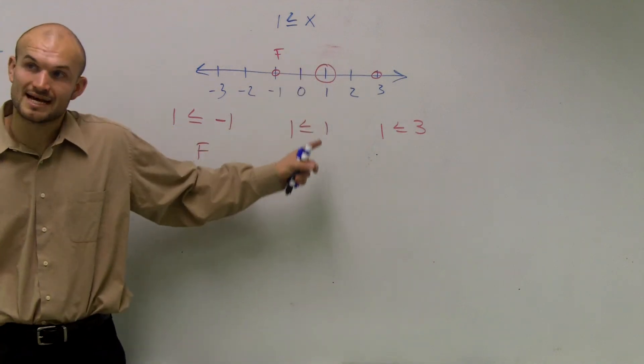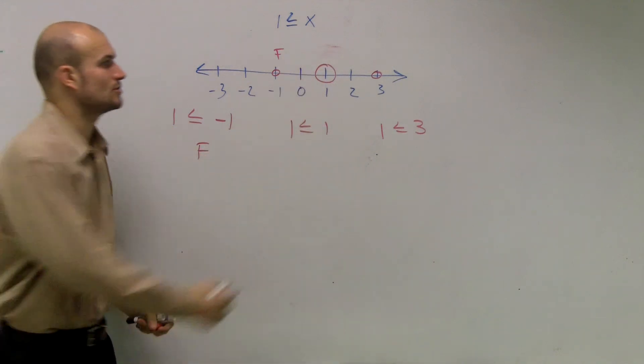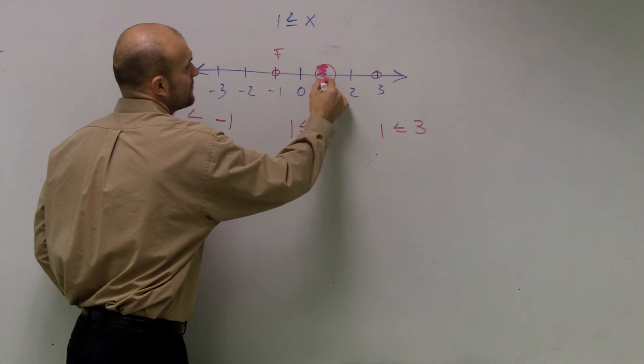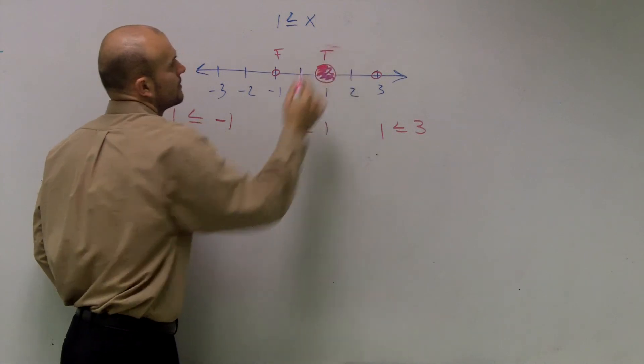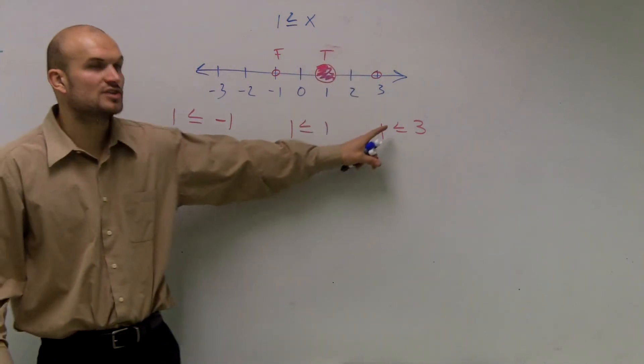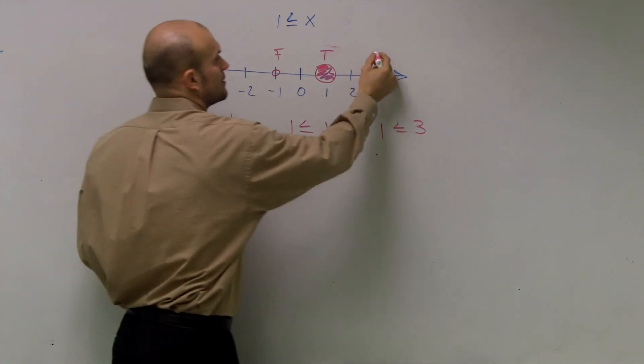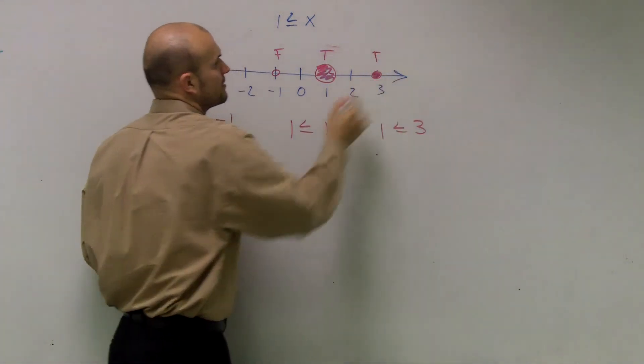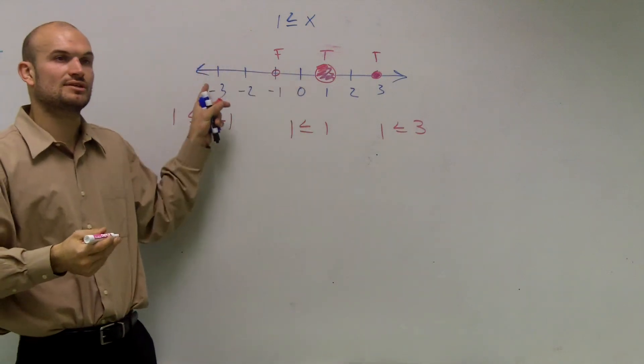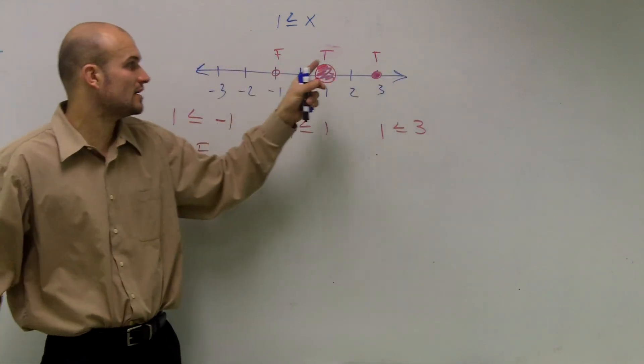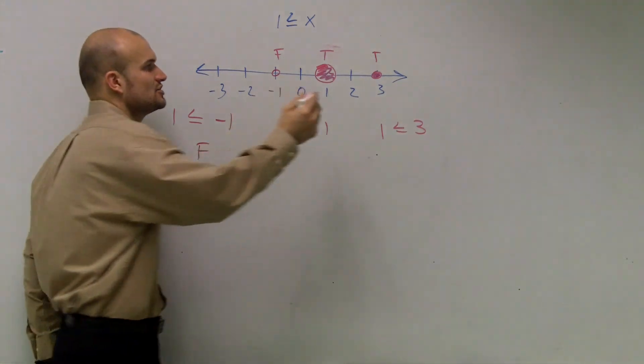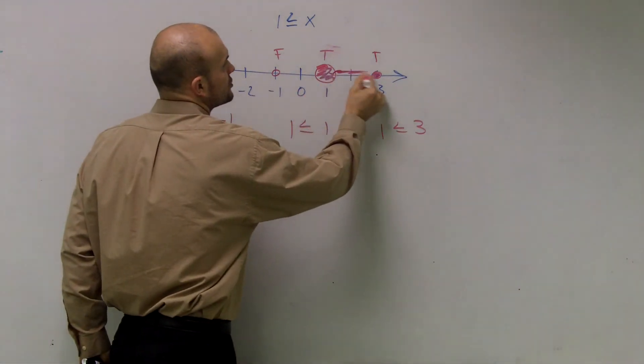Then, I say is 1 less than or equal to 1. That's true. So, we shade it in. Then, I look over here. Is 1 less than or equal to 3? That's true. So, I shade in this point. And since it's false to the left and true to the right of my main point, I shade to the right.